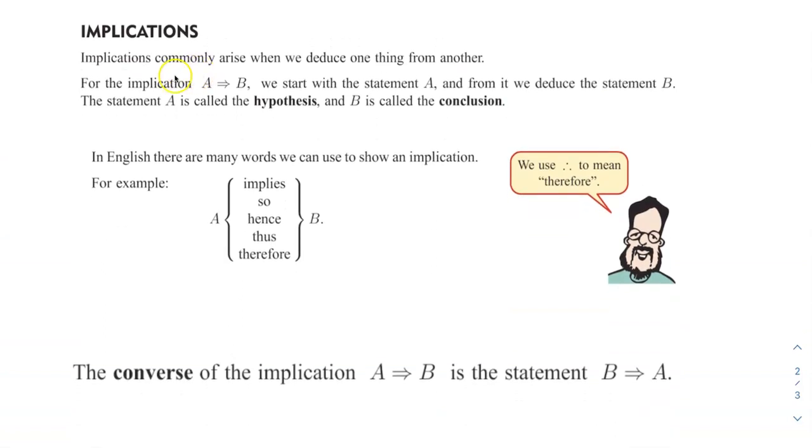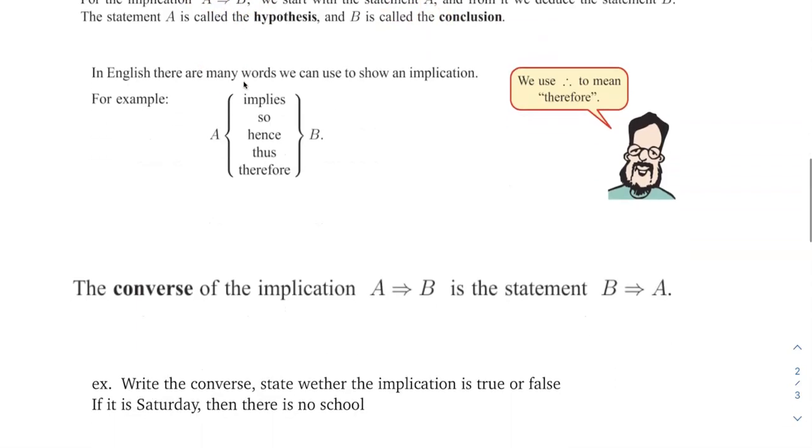Implications. A lot of times in proofs, we're going to try and imply something, like this implies this, this implies that. So we're going to use lots of implications. We can see something like A implies B. We call A the hypothesis. We're saying if this is true, then this happens. And B is called a conclusion. And keep in mind, it only goes this direction. A implies B. We haven't said anything right now about B implies A or vice versa or other things.